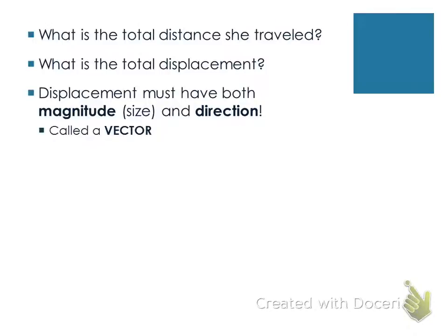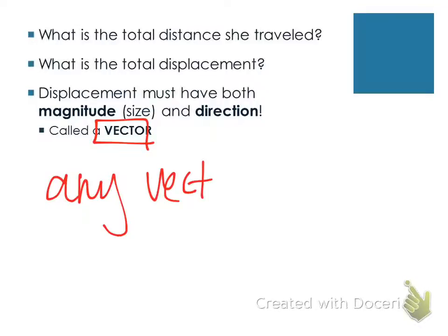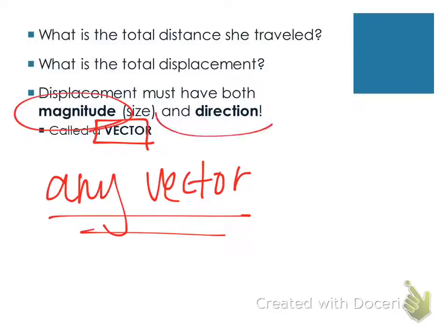Displacement is an example of what we call a vector. Any vector must have both magnitude and direction. We're going to talk about lots of different types of vectors — velocity is a vector, acceleration is a vector, forces are all vectors. This is just the first one. All vectors have to have both magnitude and direction; displacement is the first example we came to.